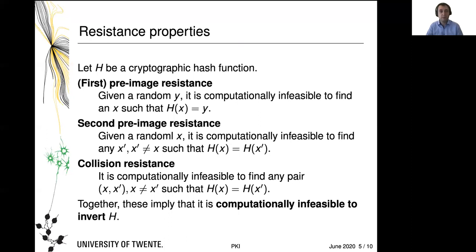What are the resistance properties about? Pre-image resistance says: given a random value y, it is computationally infeasible to find an x such that h(x) equals y. Second pre-image resistance is similar but adds a twist: given a random value x, it is computationally infeasible to find any x′ different from x such that h(x) equals h(x′). Collision resistance says it is computationally infeasible to find any pair x, x′ — not the same — such that h(x) equals h(x′). Note the difference: in second pre-image resistance you're given a random x, whereas collision resistance asks you to find any pair. These imply that it is computationally infeasible to invert the hash function — and that's going to be useful.